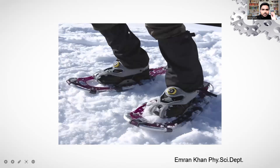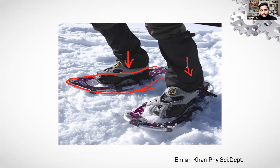To avoid sinking in snow, skaters use a skateboard. The skateboard has a large area, so the pressure is very less, and the foot does not immerse in the snow. This is a direct application of the inverse relationship between area and pressure.